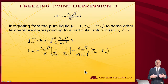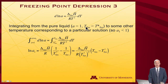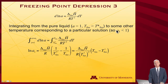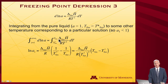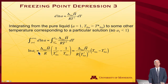Now I want to integrate both sides. I'm going to integrate from the situation where I have a pure liquid — where the activity is 1 and T is T*_fusion, the fusion temperature of the pure substance — to some other temperature relevant to a particular solution, where the activity must be less than 1. So I integrate from A=1 to A=A_1, and the temperature from T*_fusion to whatever it is for the liquid solution. The left-hand side integral of d(log A) is trivial: I get log A_1, and log(1) = 0 drops out.